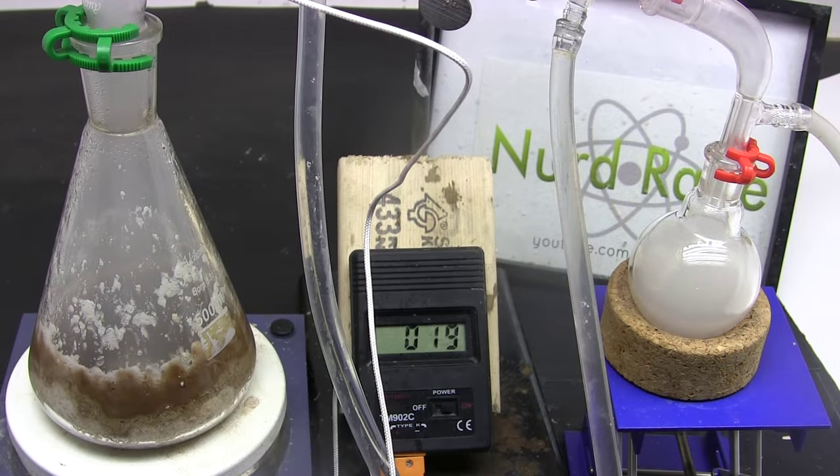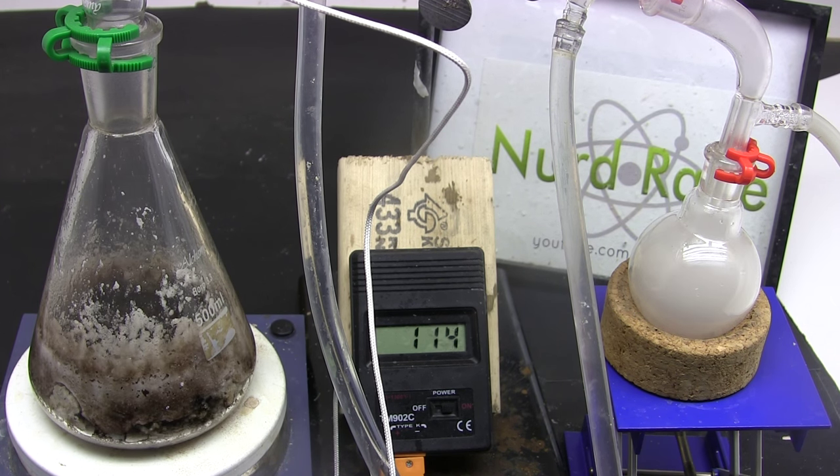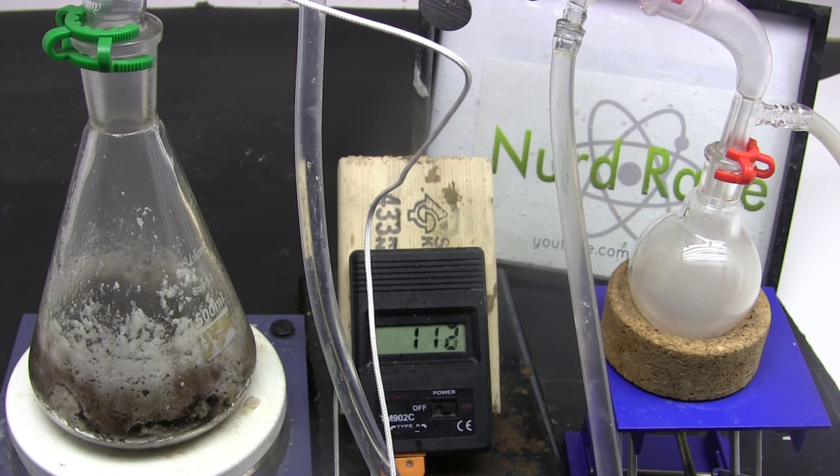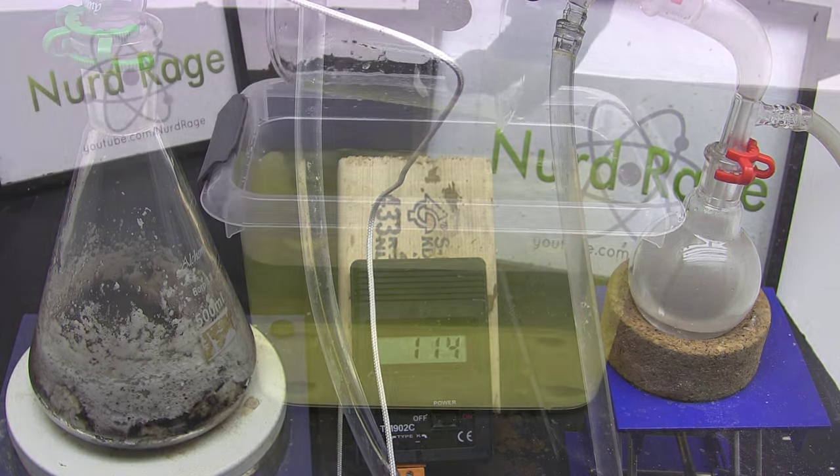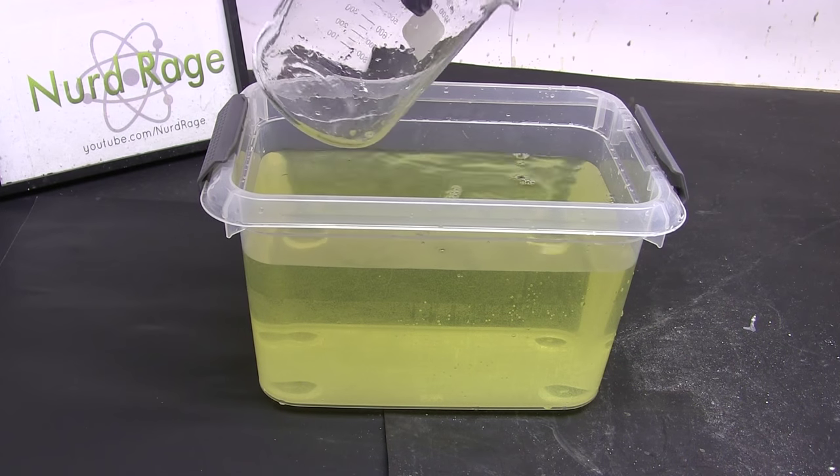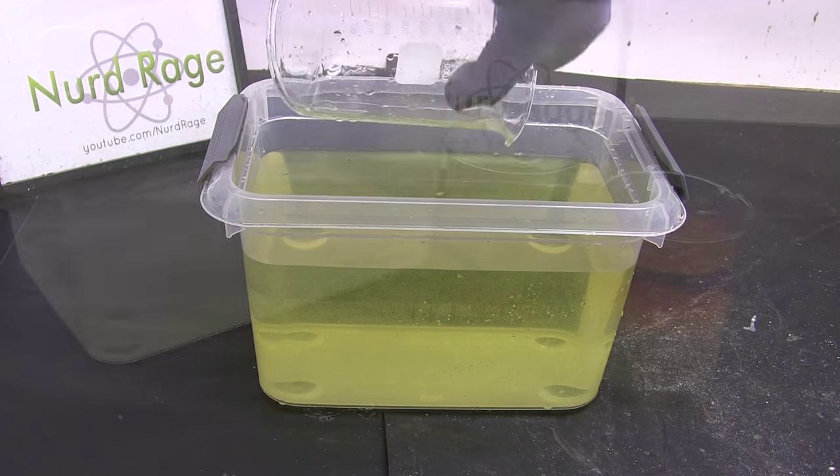Now distill off the propionic acid. I'm not using a vacuum but it looks like we're not reaching the boiling point of propionic acid at around 141 degrees celsius. There might still be some lingering impurities like water and organics. You're probably wondering why we didn't just dry the original sodium propionate solution and add sulfuric acid to that to distill out the propionic acid.